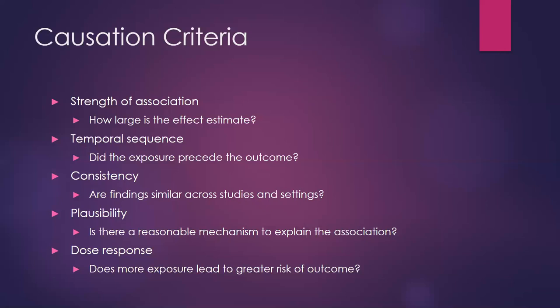A cross-sectional study asking 'have you fallen in the past month and have you taken these medications in the past month' won't provide strong evidence that opiates cause falls, because causation could run the other way. Consistency means finding similar results — the risk ratio in the same direction — across different study designs, different populations, and different settings. Even if each individual study is imperfect in some way, the body of evidence should be telling the same story.